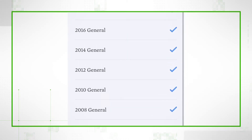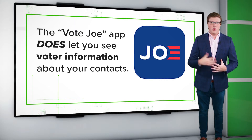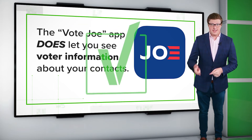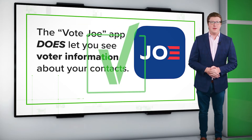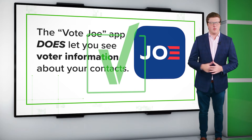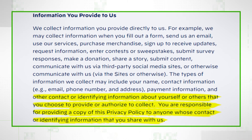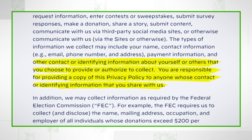If you click on a name it shows you which elections they voted in, but that's where it stops. You can't see who they actually voted for, just the elections they participated in. So yes, this is a real function of the app — but how does it do this, and is it accurate?